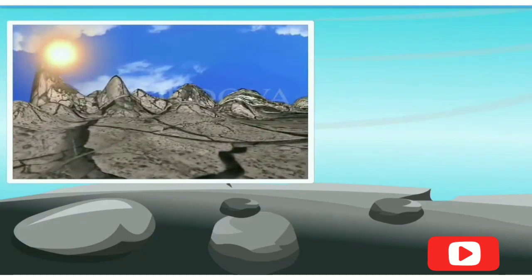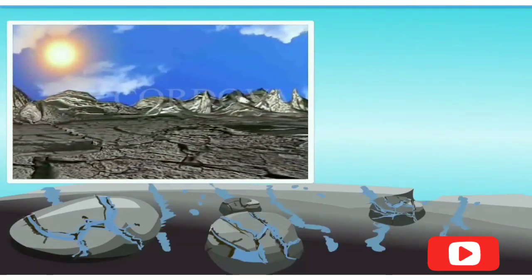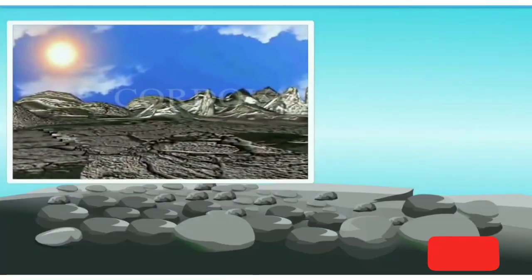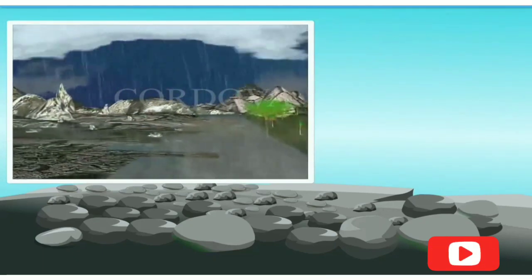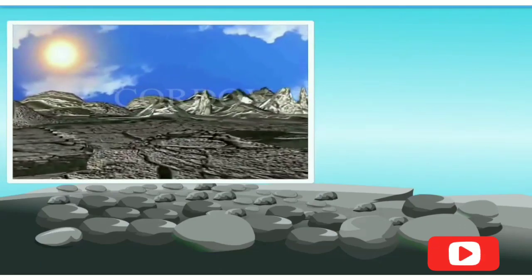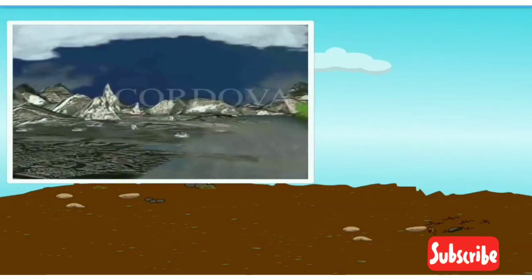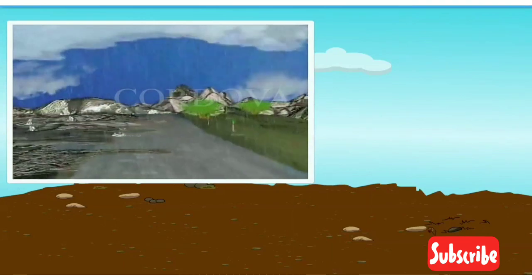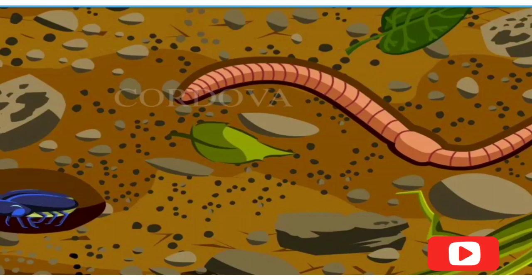Formation of soil. Soil is formed by the breakdown of rocks into tiny pieces. Rocks are heated by the sun and cooled by the cold weather. The continuous heating and cooling causes the rocks to crack and break into small pieces. These small pieces are carried to different places by the wind or running water. The pieces rub against each other till they finally become tiny particles of soil. Dead plants and animals also get mixed with these pieces. Formation of soil is a continuous process.